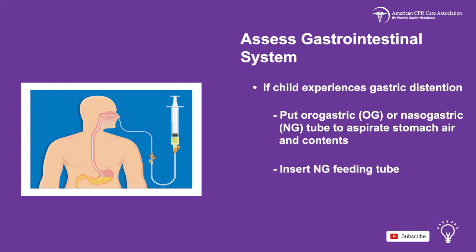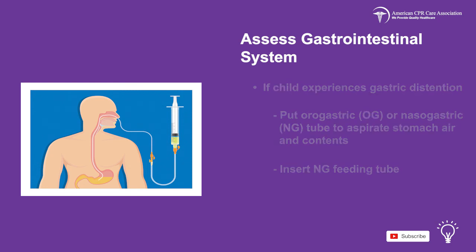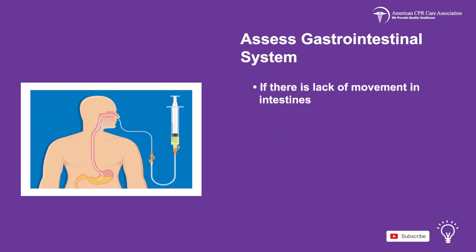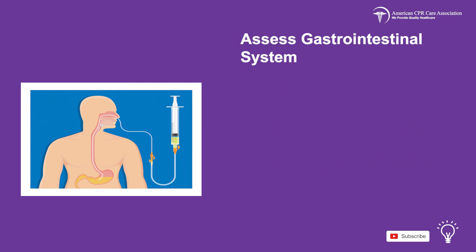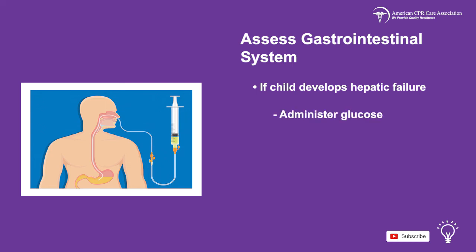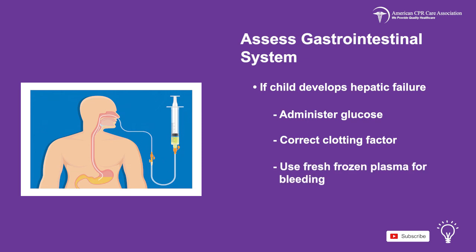Insert an NG feeding tube. If there is a lack of movement in the intestines, put in an OG or NG tube to aspirate gastric fluids and contents. Maintain electrolyte and fluid balance. If the child develops hepatic failure, administer glucose and correct the clotting factor, and use fresh frozen plasma for bleeding.